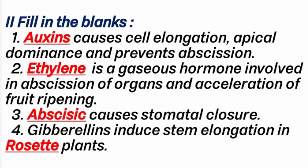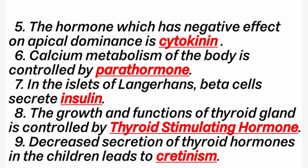4th question: Gibberellin induces stem elongation in rosette plants. Answer is rosette plants — which have a circular arrangement of leaves. 5th question: the hormone which has a negative effect on apical dominance is? Answer is cytokinin.